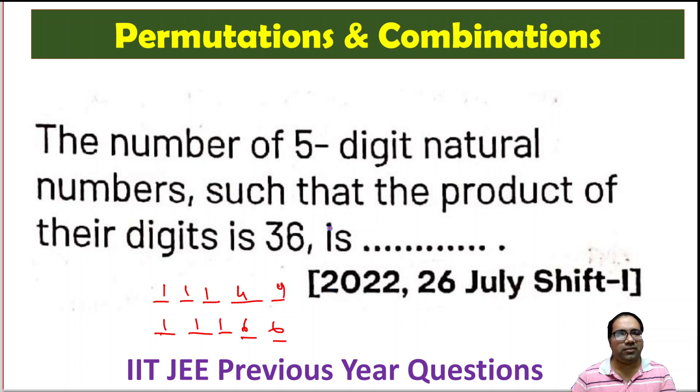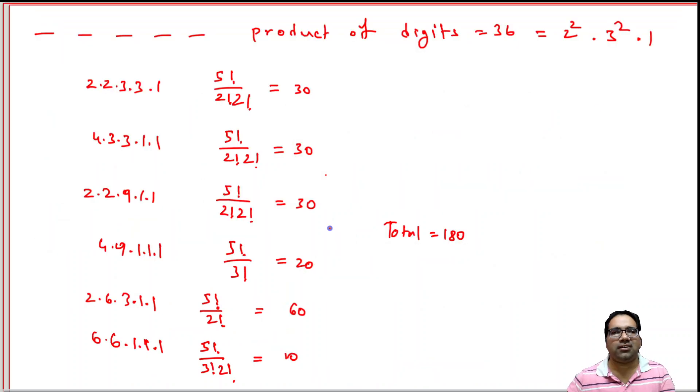If you do the prime factorization of 36, what is that? That is 2² × 3² × 1, which is nothing but 4 × 9 × 1. Now, what does that mean? We have 5 digits. We have to split this into 5 digits.